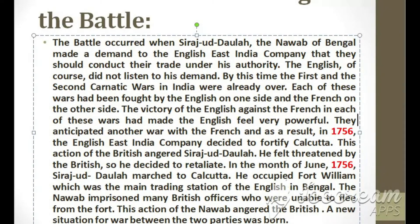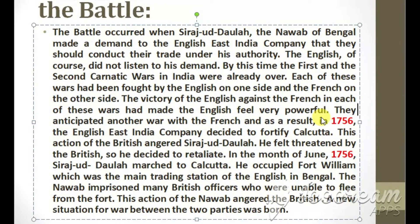He felt threatened by the British, so he decided to retaliate. In the month of June 1756, Sirajud Daula marched to Calcutta. He occupied Fort William, which was the main trading station of the English in Bengal. The Nawab imprisoned many British officers who were unable to flee from the fort. This action of the Nawab angered the British, and a new situation for war between the two parties was born.